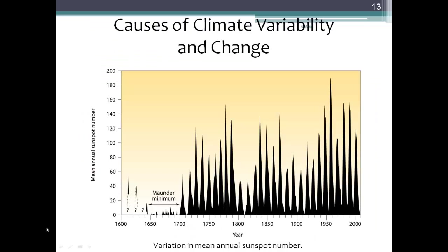This graph shows the variation in the mean annual sunspot number, representing solar activity. It's believed that there's a relationship between solar activity and earth's climate, though we don't fully understand it. It does seem to be the case, and you can see the sun goes through regular periods of activity and inactivity.